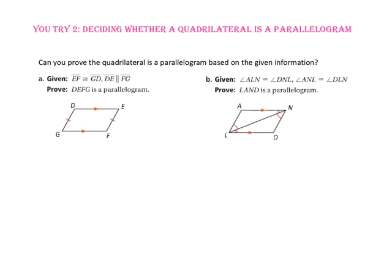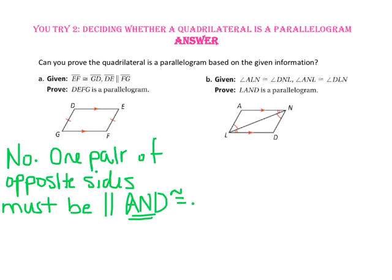Pause the video and do you-try number 2. Can you prove the quadrilateral is a parallelogram based on the given information? In part A, segment EF is congruent to segment GD, and segment DE is parallel to segment FG. Since only one pair of opposite sides DE and FG are parallel, and only one pair of opposite sides DG and FE are congruent, we cannot prove quadrilateral DEFG is a parallelogram.